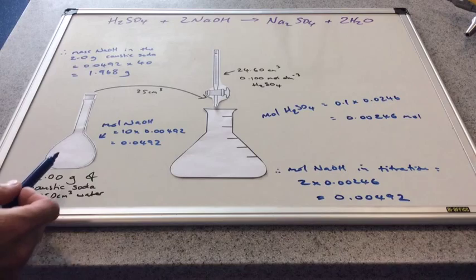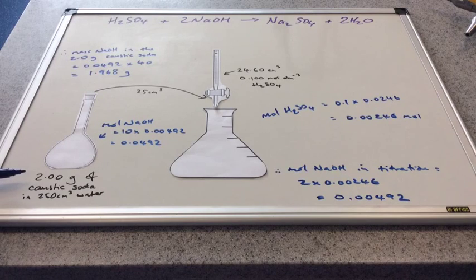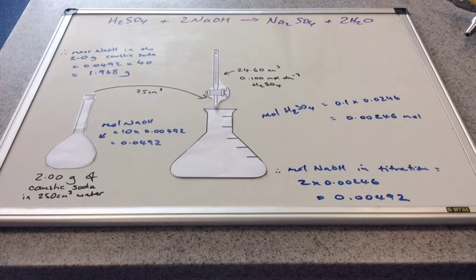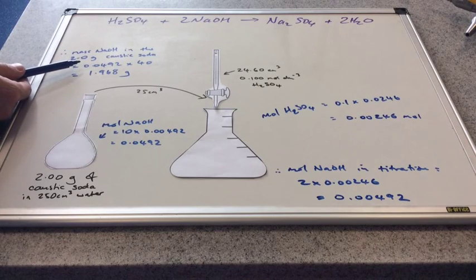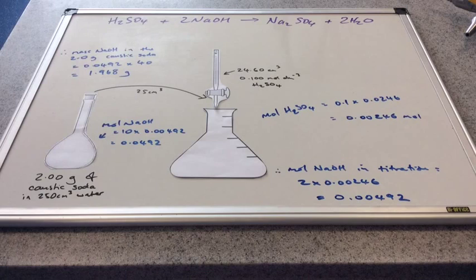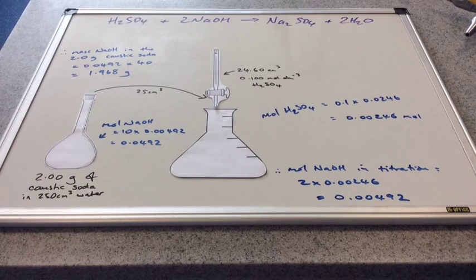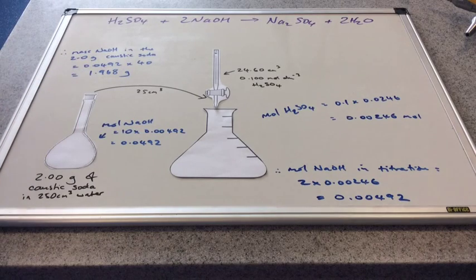Now we know the moles of sodium hydroxide in this flask. Where did they come from? From the two grams of caustic soda. We need to work out how many grams of sodium hydroxide that many moles equate to. Using the mass triangle, mass of sodium hydroxide equals moles multiplied by the MR of sodium hydroxide, which is 40, coming out at 1.968 grams. Of those two grams, 1.968 grams were sodium hydroxide.